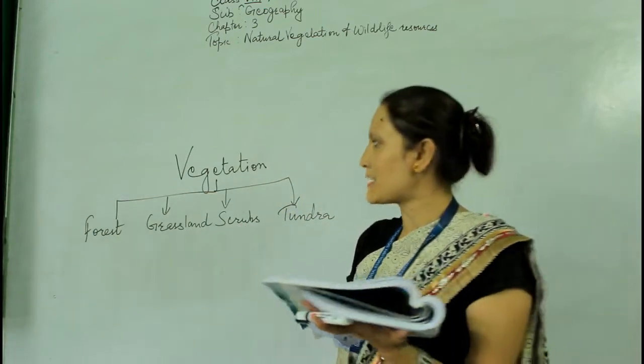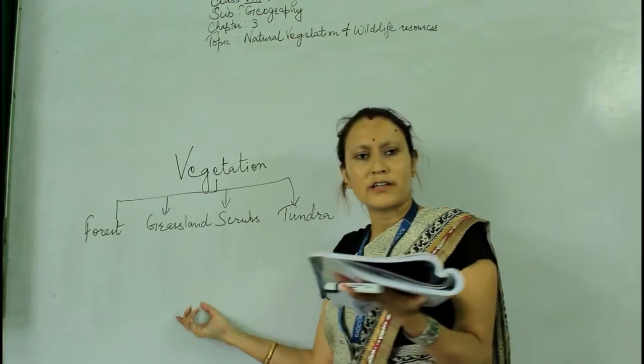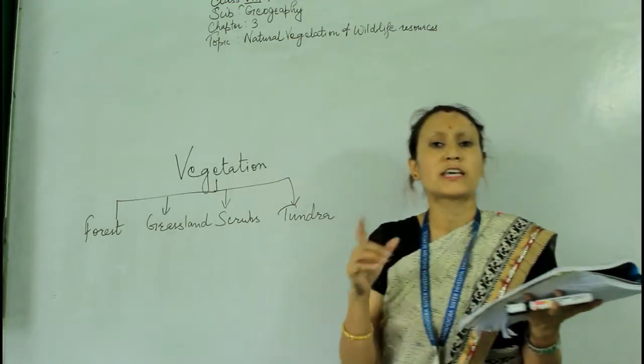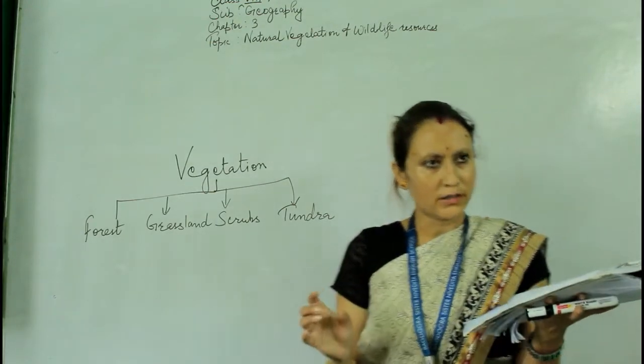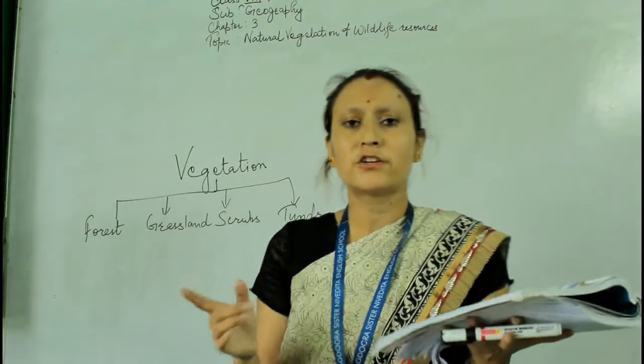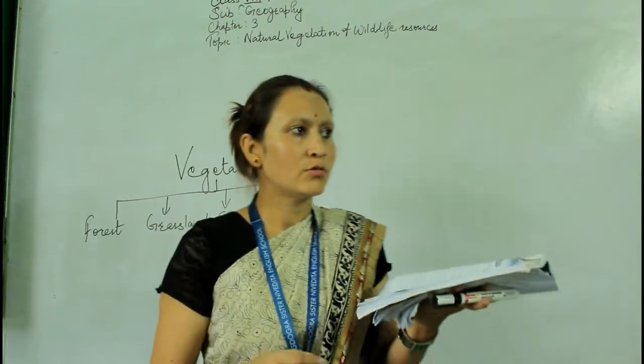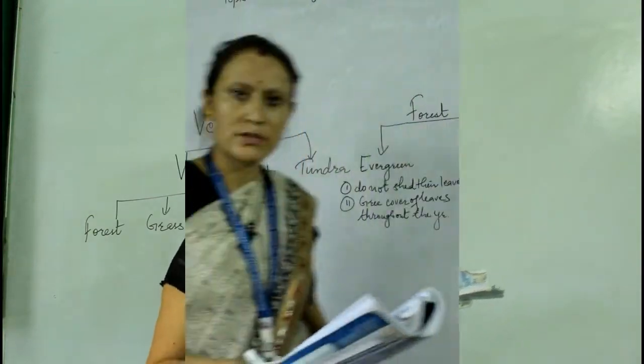Grasslands are mainly found in areas which experience moderate rainfall — neither too hot nor too cold.